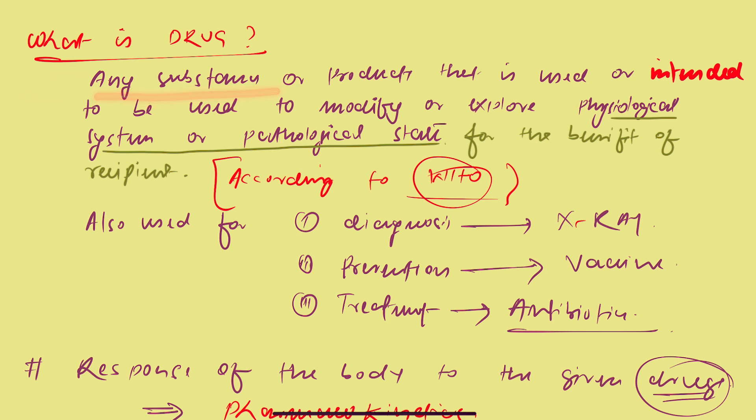So what is drug? Any substance or product that is used or intended to be used to modify or explore physiological system or pathological state for the benefit of the recipient. So remember the substance or product that is used or intended to be used for the patient should be beneficial for the recipient.